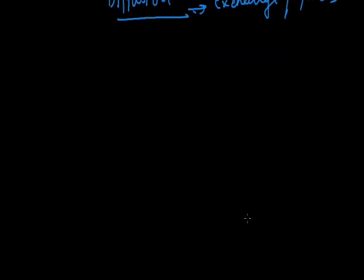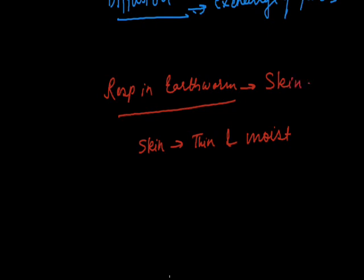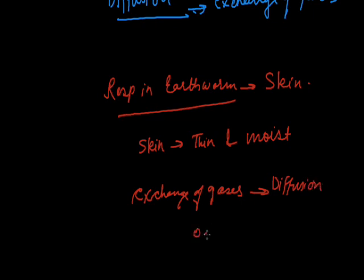Respiration in earthworm: organisms like earthworm and leech exchange gases through their skin, as their skin is very thin and moist. Respiration takes place through the skin by simple diffusion. The skin is rich in blood supply, so oxygen absorbed by the moist skin is transported to all cells of the body through blood. Carbon dioxide from body cells diffuses into the blood and is expelled out through the skin.